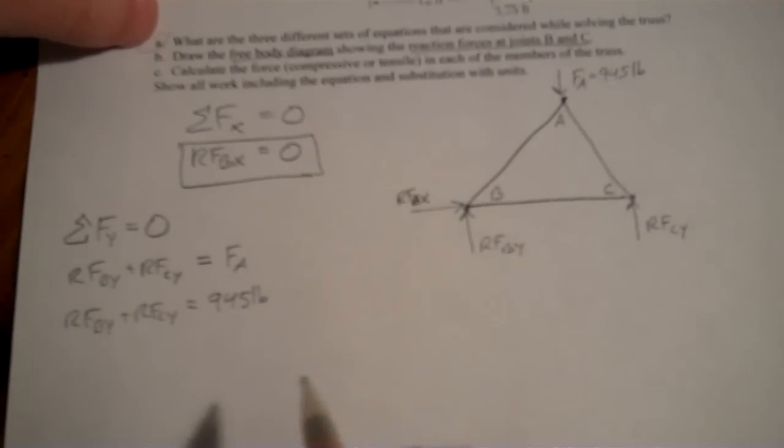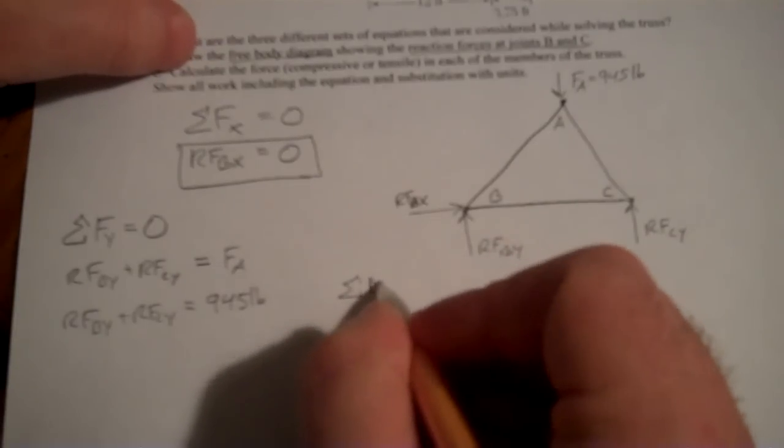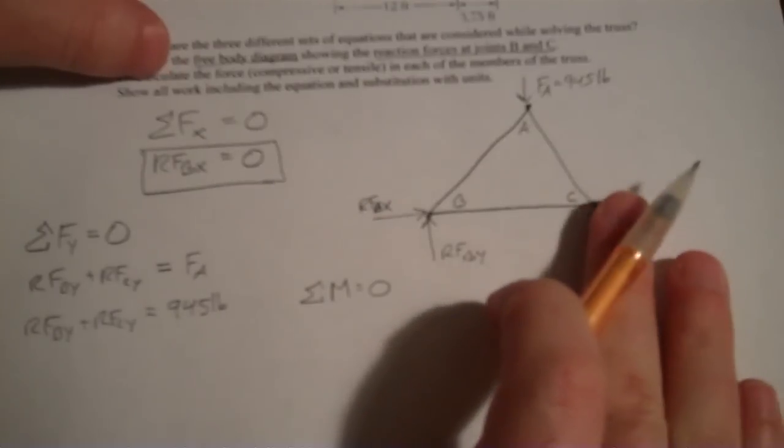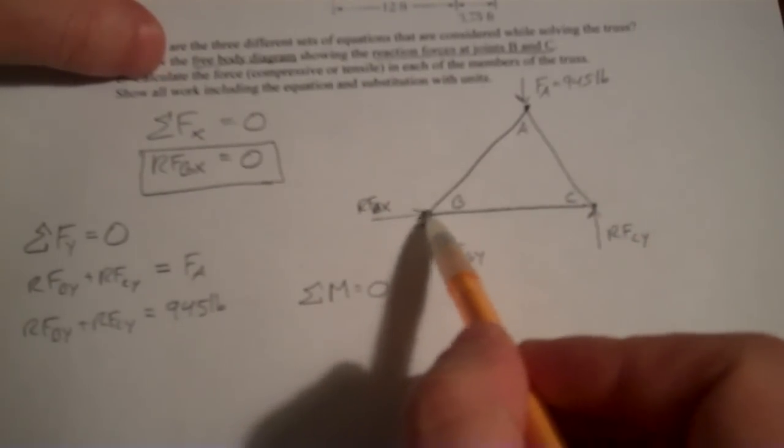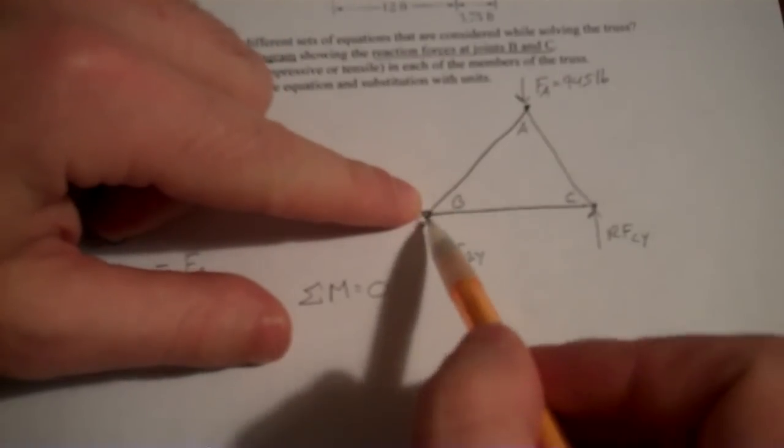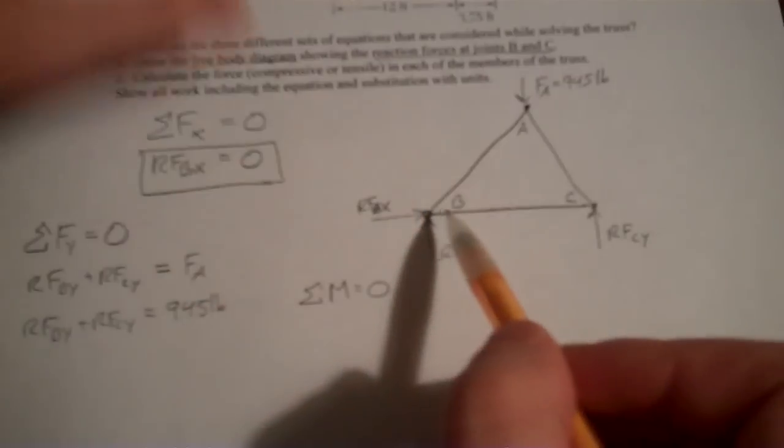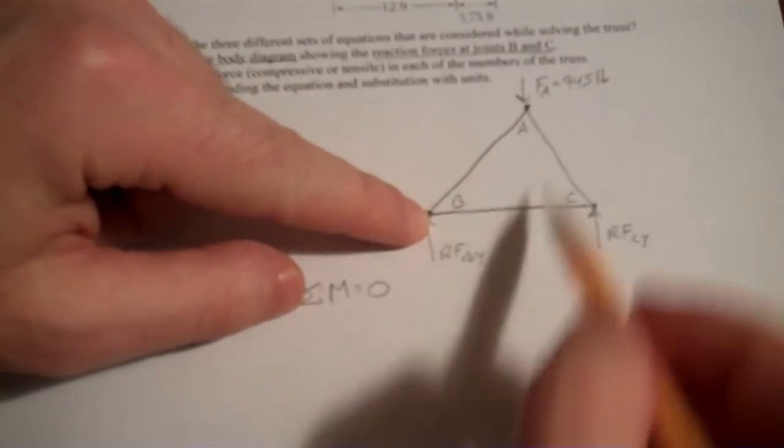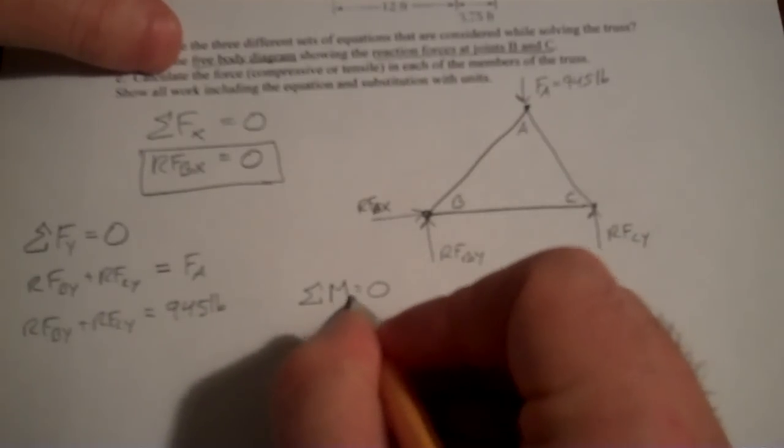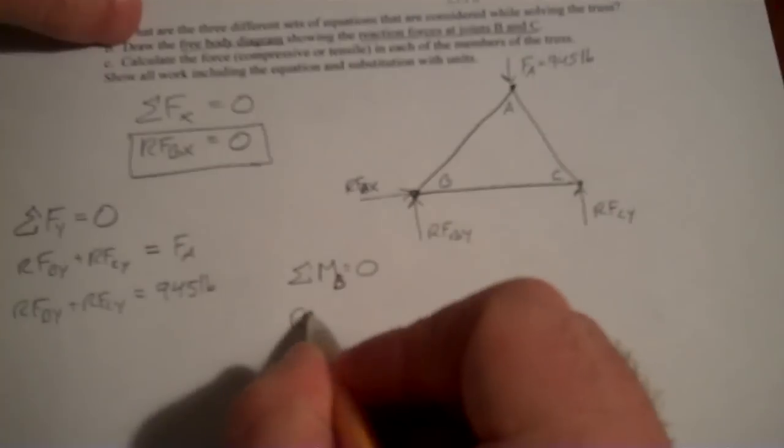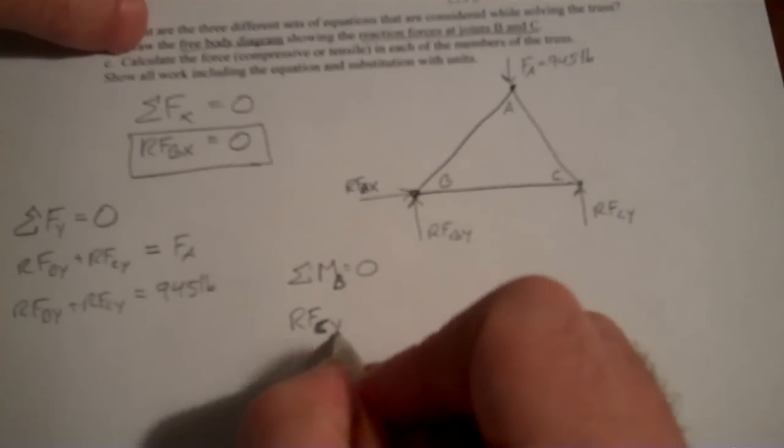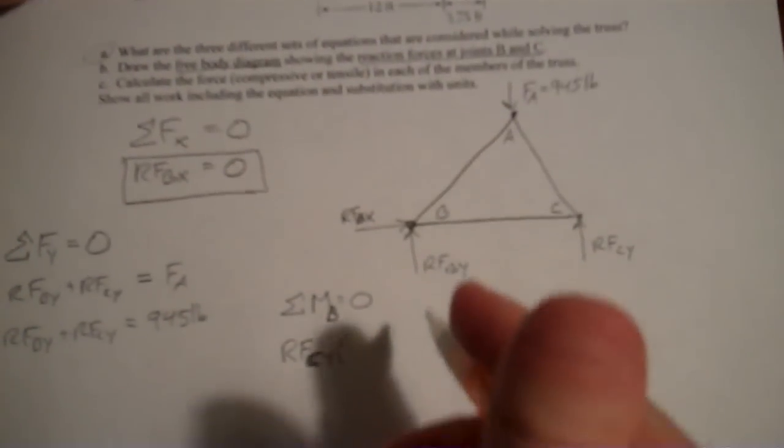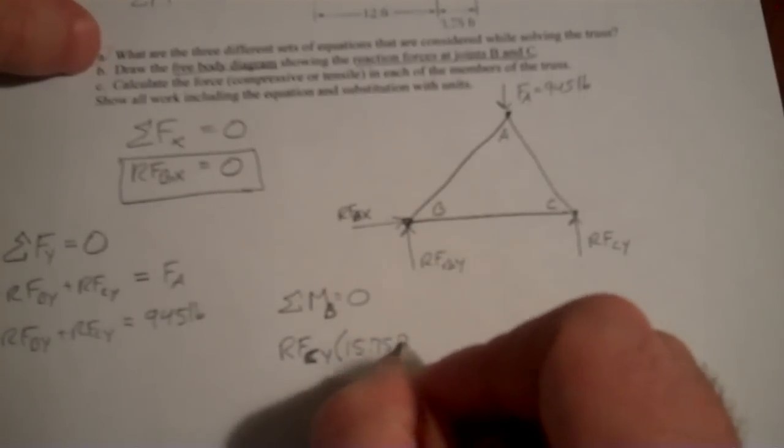So now we want to set up our moment equation. So the sum of the moments, again, has to be zero. And we can choose any point that we want to, but if I pick B or C, that'll cancel out one of these forces, since if I pick B, let's say, RF,B,Y can't cause a moment around B, because there's no perpendicular distance between it and the joint itself. But RF,C,Y will cause a moment counterclockwise, and F,A will cause a moment clockwise. So I'm going to choose sum of the moments around joint B. So I have force times distance, so RF,C,Y, times the distance here. Now I need to check back to my original drawing. We had 12 feet plus another 3.75, so the distance here is 15.75 feet across the base of the truss.